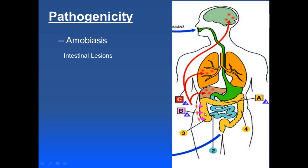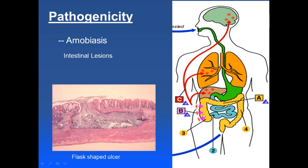The first condition is the intestinal lesion. As we saw in its life cycle, when it reaches the large intestine, it enters through the crypts of Lieberkühn, destroys the columnar cells of the mucosa, reaches the submucosa, and forms a typical flask-shaped ulcer. You can see this flask-shaped ulcer here — this is a typical clinical condition caused by Entamoeba histolytica, resulting in bloody diarrhea in amoebiasis.